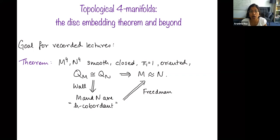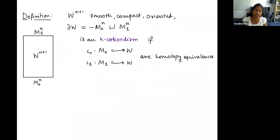We saw earlier that this proof has two parts. The first part is due to Wall: that isometric intersection forms imply h-cobordism. And then there's the second part due to Freedman: that h-cobordism implies homeomorphism for manifolds of this form.